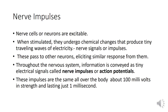Throughout the nervous system, information is conveyed as tiny electrical signals called nerve impulses or action potentials. These impulses are the same all over the body — about 100 millivolts in strength and lasting just 1 millisecond.